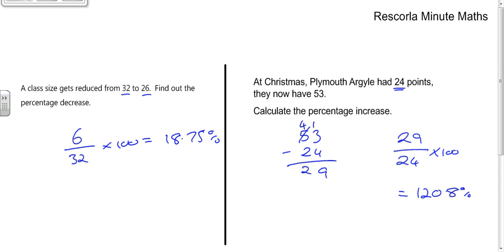Here, if we double 24, we get 48. So 53 is more than double 24. So therefore, it's going to be over 100%. So well done if you've got those answers correct.